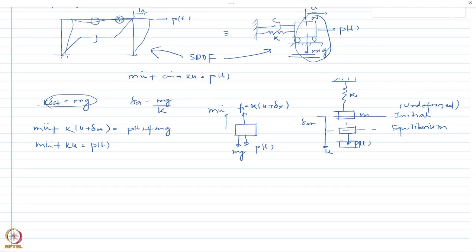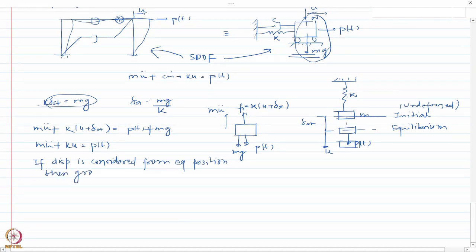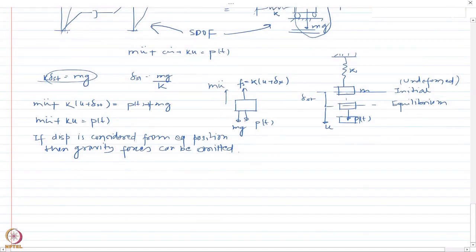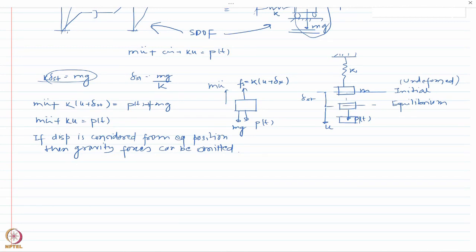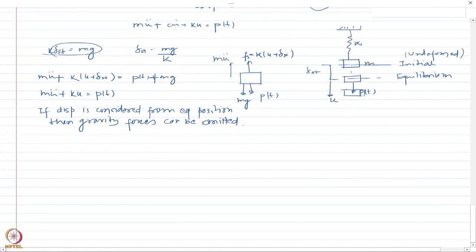This gives an important conclusion: for a single degree of freedom representation, if displacement is considered from the equilibrium position, then gravity forces can be omitted. You don't need to consider the gravitational force if you are measuring deformation from the equilibrium position, because the gravity force was already balanced by the initial stored energy k*delta_st in the system.